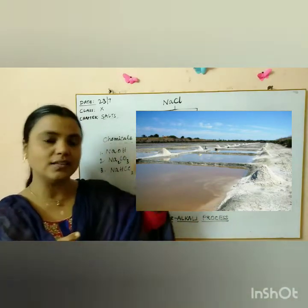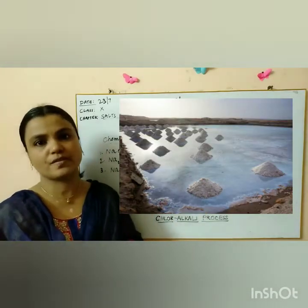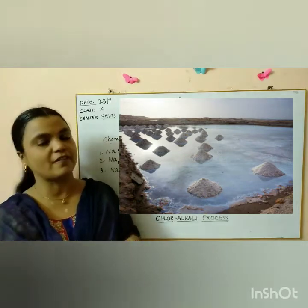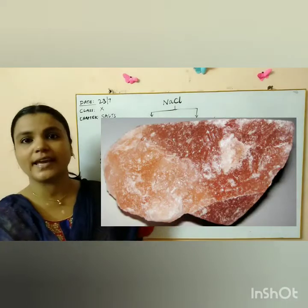And then what is left is nothing but salt, but that is an impure form of salt which is again purified by various processes. That is one way how we can get sodium chloride.